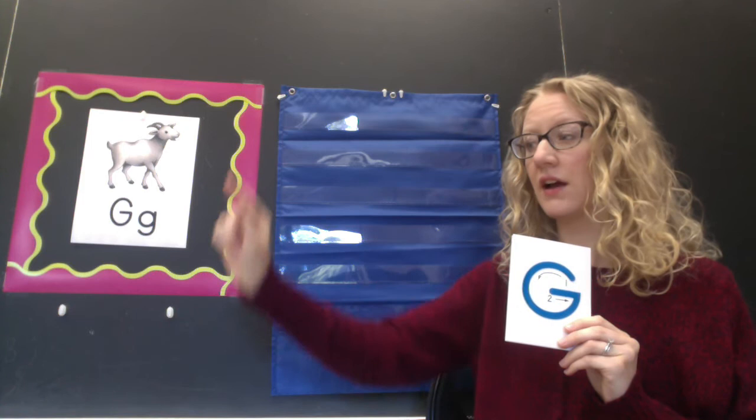Let's try writing this one in the air. Ready? Get your finger up. Curve back and around, all the way down, keep going, stop, short line in. One more time. Let's do it a little faster. Curve back and around, all the way down, and stop, make a short line in.